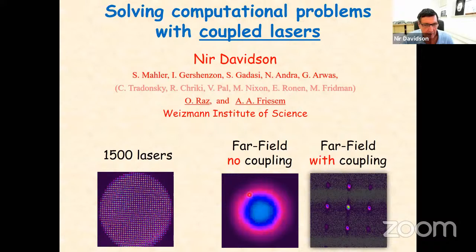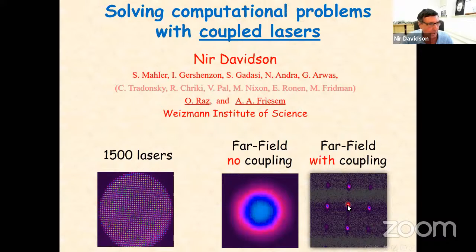However, if you couple the lasers and lock the phases to all be the same, you will get a far-field diffraction pattern composed of very sharp Bragg peaks. The area of this peak is 1,500 times smaller than the area of the scattered light, so we get 1,500 times more light intensity in this region even though the total power is the same, because we are able to concentrate it. This relates to the basic motivation for phase-locking and coupling lasers.